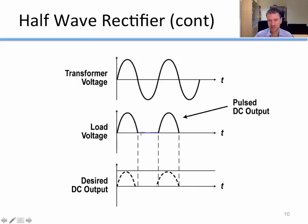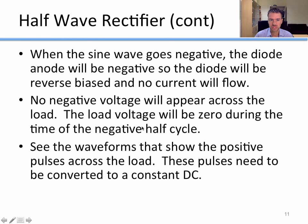It would really be nice if we didn't have to deal with that. To summarize the half-wave rectifier: when the sine wave goes negative, the diode anode will be negative, which means the diode will be reverse biased and no current will flow because a diode is a one-way gate for current.